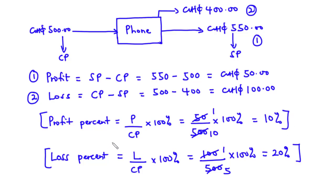Profit and loss are often given as percentages of the cost price, so the cost price is always fixed and remains in the denominator. Now let's look at some equations involving profit, loss, profit percent, and loss percent.